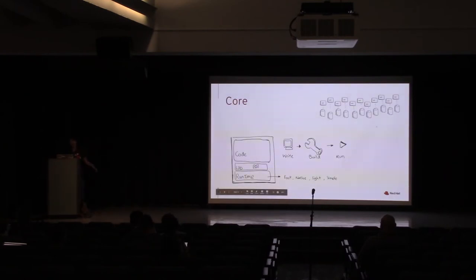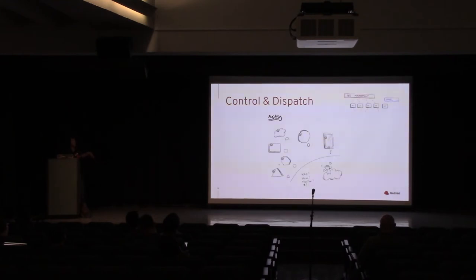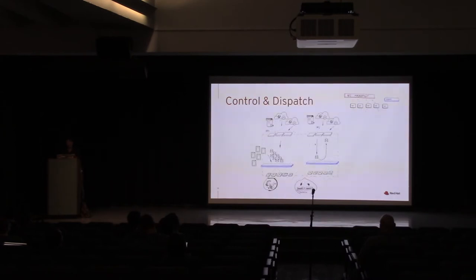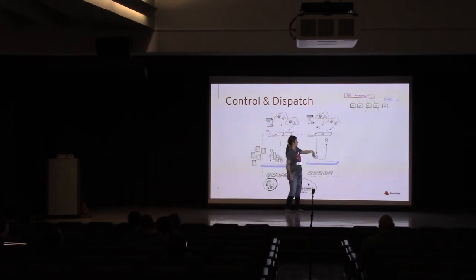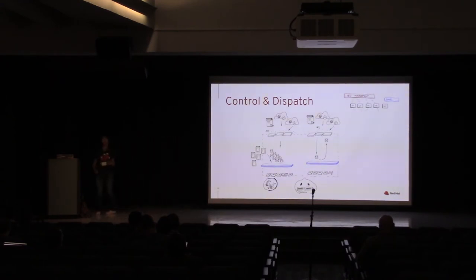The core is just build it and run it — it has its data source connecting to it and a runtime. And then we have the control and dispatch, which is the facade that helps deal with all the different needs from different customers and users. There are two different kinds of inputs: request and response, and streaming data. You have to be equipped to receive all these kinds of inputs from the control and dispatch.